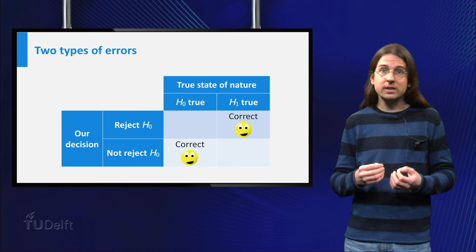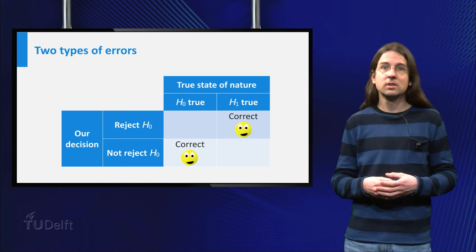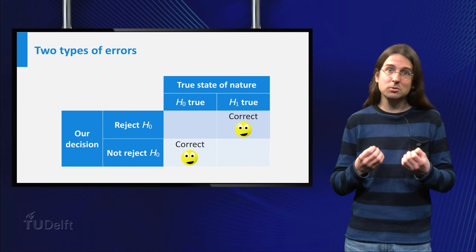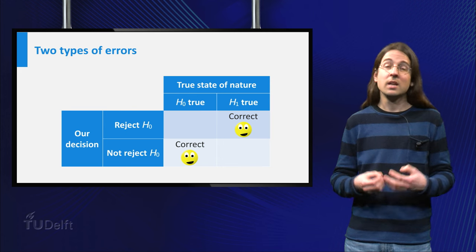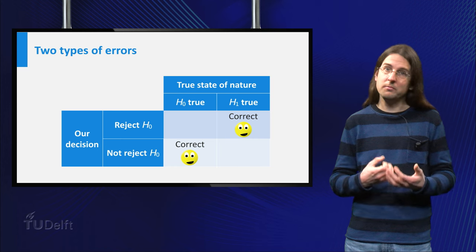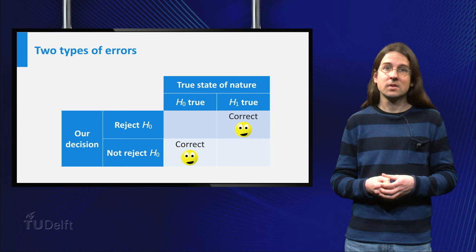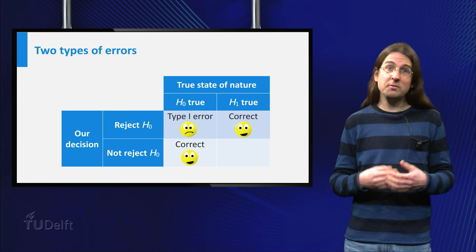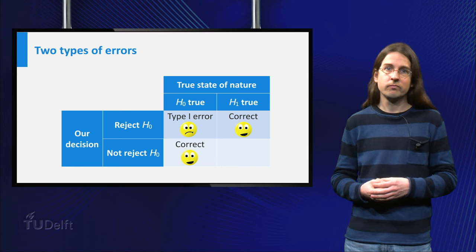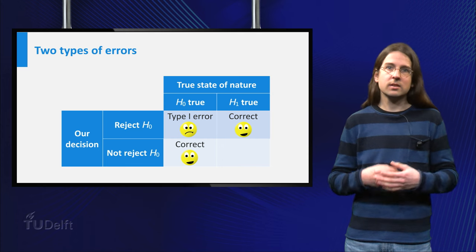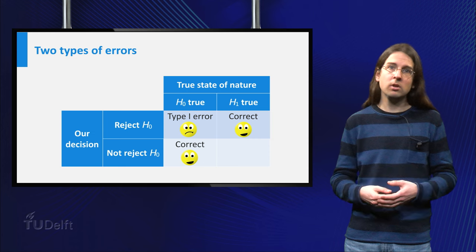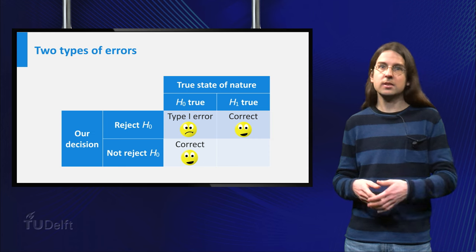If we are in the upper right or the lower left corner, then we are happy, because our result corresponds to the true world. In the other two corners, we have made a mistake. A type 1 error occurs if H0 is true but we reject it. This would mean that the climate in 2014 is equal to before, but we conclude that it is warmer.